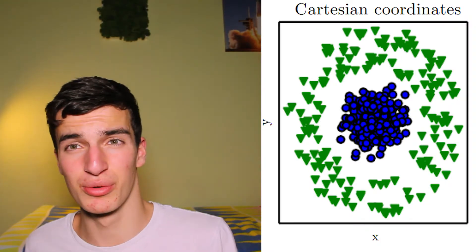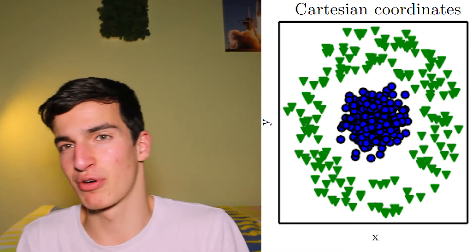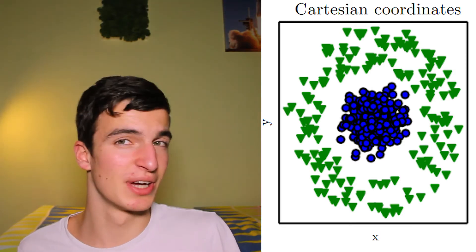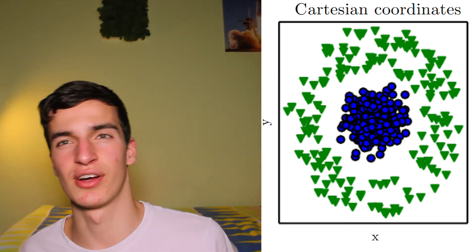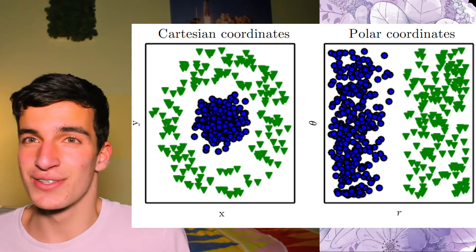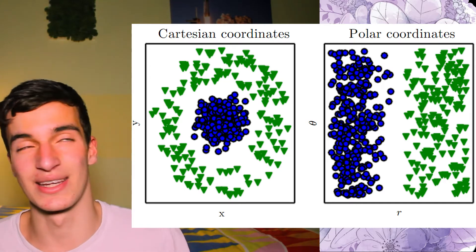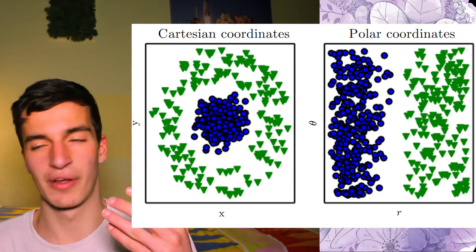Let's take an example. There is an image on the screen now, and your task is to separate the blue stuff and the green stuff from each other with a single line. This is an impossible task both for you and for an AI. But if we represent the data a little bit differently, then drawing this line is much easier. So it matters a lot how you represent data.